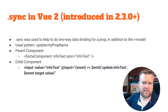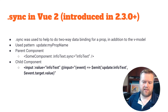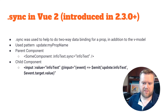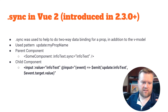Dot sync was used to help with two-way data binding for props, in addition to V model, using the pattern update colon my-prop-name. In the parent component you'd write some-component info-text dot-sync equals info-text. Inside the child component, you emit update colon info-text, which is a reserved keyword pattern that knows to update whatever was passed in, and then you pass event.target.value.